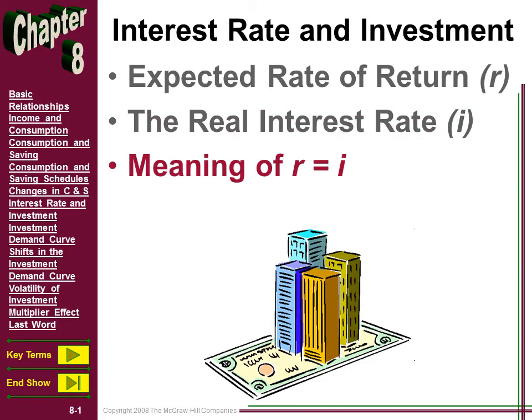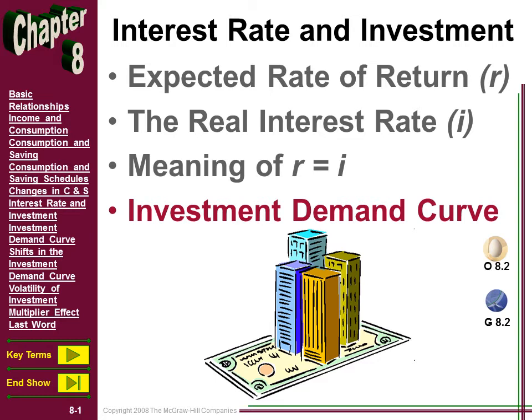What is the meaning of R equals I? We're going to see graphically on what's called the investment demand curve that on our vertical axis, at all places where the expected rate of return is equal to or greater than the real rate of interest, that's going to show us the level of business investment at that particular interest rate. And that will help us graph our investment demand curve.